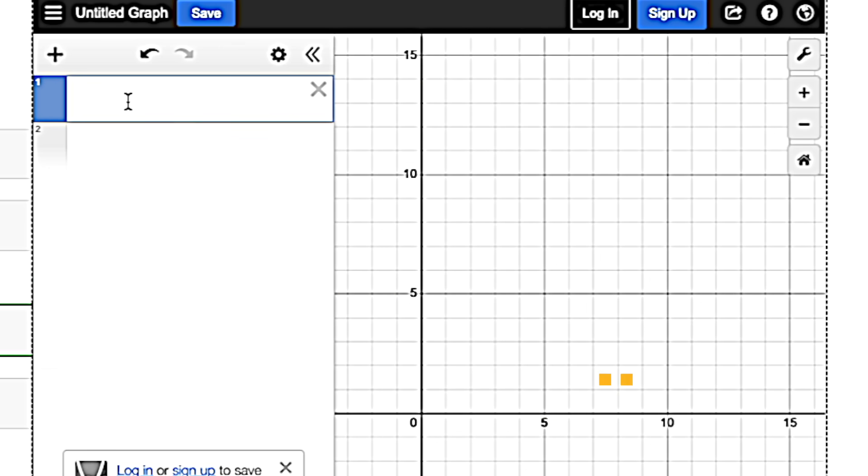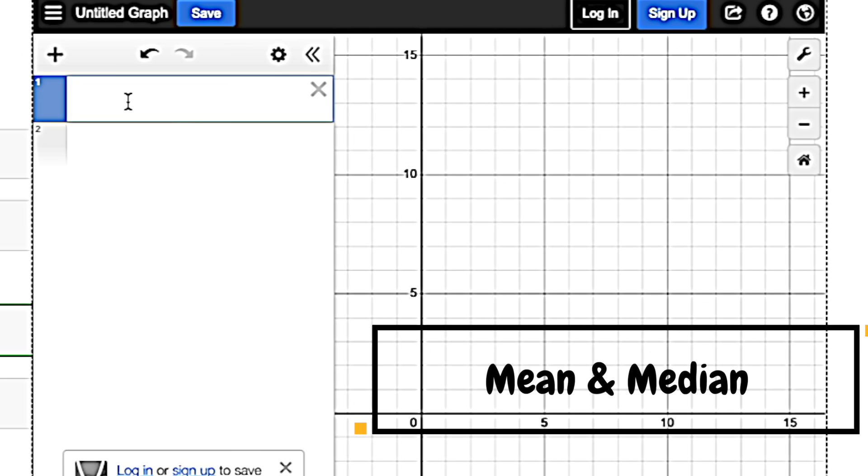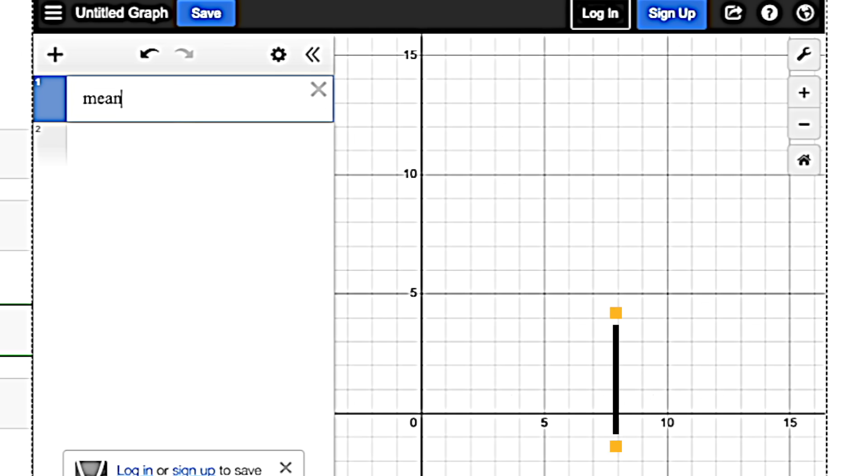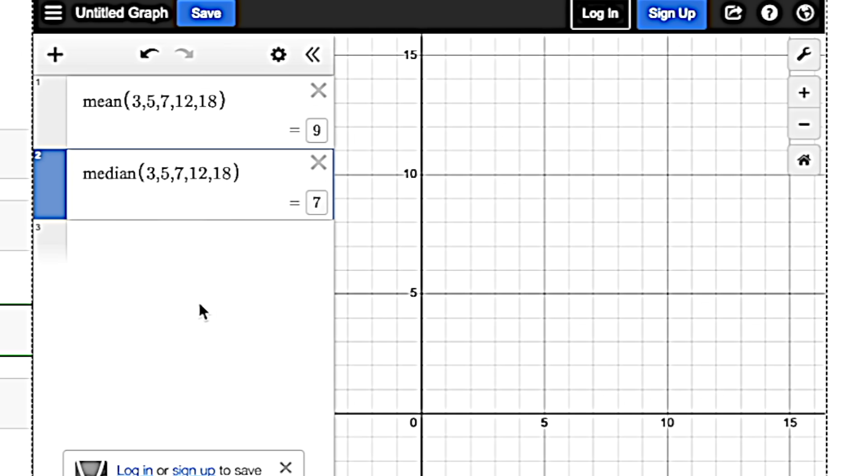If we're trying to figure out the mean or median of a set of numbers, we could also do that by putting in the word mean or median. And just like that, it will pull those up for us in case you don't know how to do it.